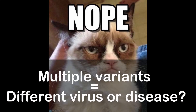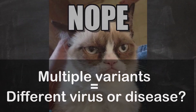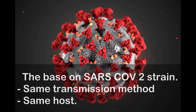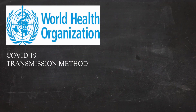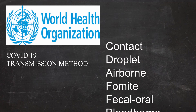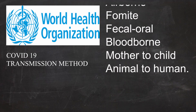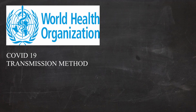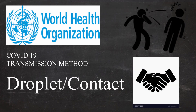As I mentioned above, multiple variants don't mean it's a different virus or disease. COVID-19 variants still have their base on the SARS-CoV-2 strain. It means that they share the same transmission method and same host. The WHO stated COVID-19 is possibly transmitted via contact, droplet, airborne, fomite, fecal-oral, bloodborne, mother to child, and animal to human. So far, we believe that the main transmission method is droplet and contact.